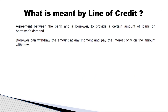A line of credit is an agreement between the bank and the borrower — the borrower being the person taking the money — to provide a certain amount of loan for a certain period whenever the borrower demands. For example, 10 crores for 10 years: whenever the borrower or customer wants money, they can avail that line of credit.